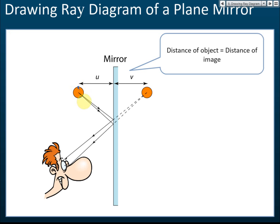To draw the virtual image, measure the distance from a point on the object to the mirror — say it's 10 cm. Draw a perpendicular reference line, then measure 10 cm on the other side of the mirror to plot the corresponding image point. Repeat for a second point, then draw the image. The distance from object to mirror equals the distance from image to mirror — for example, 10 cm each way.